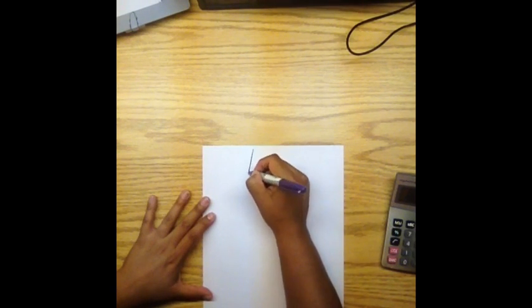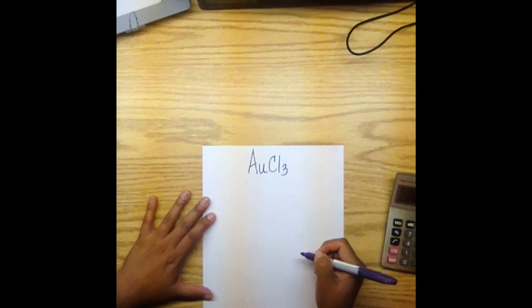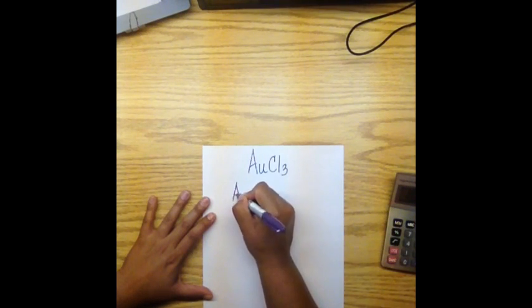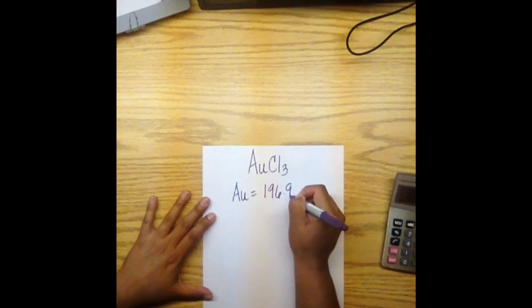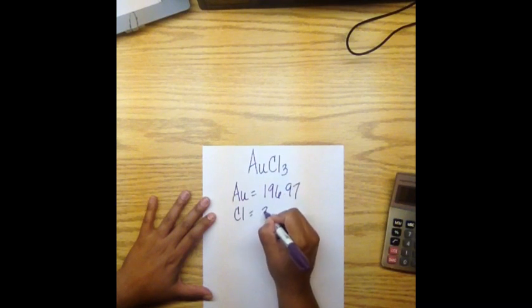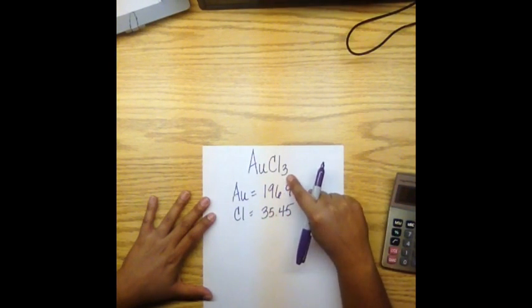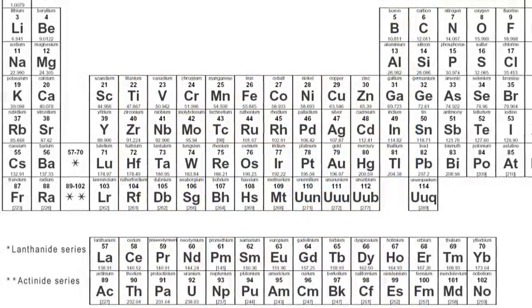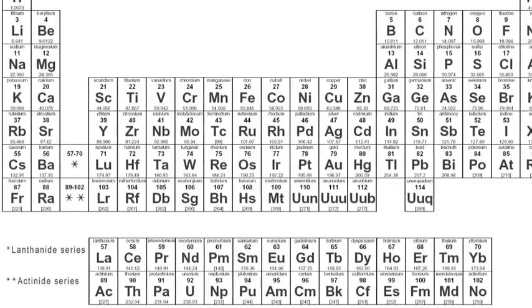For part B, the formula for gold chloride doesn't change. It's still AuCl3, but the value for the mass of gold changes to 196.97 and the value of chlorine changes to 35.45. These values come from the modern periodic table where chlorine is element number 17 and gold is element number 79.